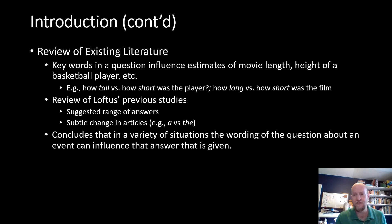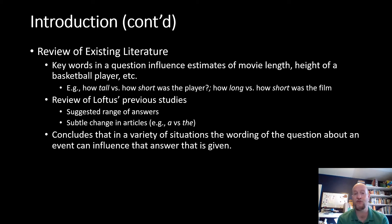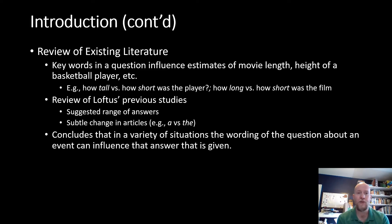She engages in a review of the existing literature, pointing to both her own previous research and that of other researchers, giving good examples of how key words in a question influence people's estimates. For example, people are shown a film and asked either "how long was the film" versus "how short was the film" — and those two groups give statistically significant different answers. People asked "how long" tend to give longer estimates, and people asked "how short" give shorter estimates. Similarly, estimating the height of a basketball player: asking "how tall" versus "how short" produces statistically significant differences.